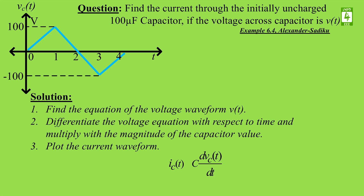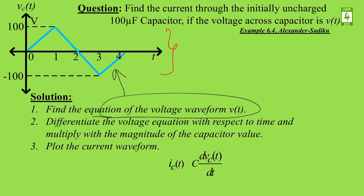The question is to find the current flowing through the capacitor when the capacitor is subjected to this voltage. In order to find the solution, first we have to find the equation of the voltage by using this waveform. Then after finding the equation of the voltage we will differentiate with respect to time and finally we will plot the current waveform from the equations that we have got.